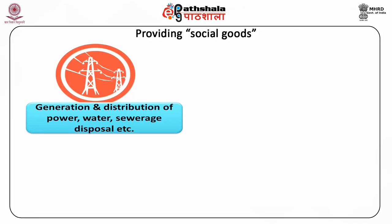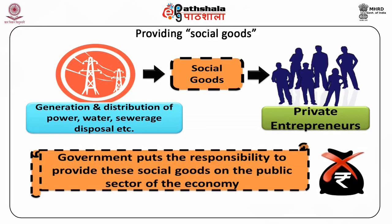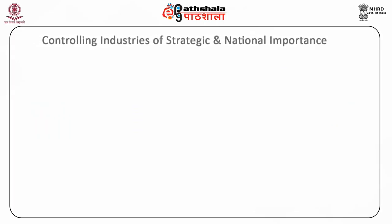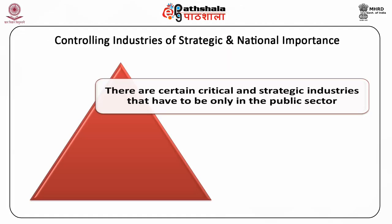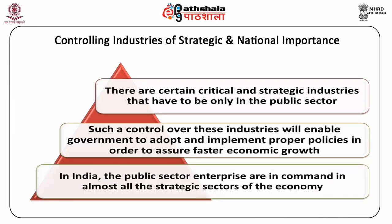Providing Social Goods: Generation and distribution of power, water, sewerage disposal, etc., are social goods and private entrepreneurs do not find any incentives in investing in these social goods. In such cases, the government puts the responsibility to provide these social goods on the public sector of the economy. Controlling industries of strategic and national importance: There are certain critical and strategic industries that have to be only in the public sector. In India, the public sector enterprises are in command in almost all the strategic sectors of the economy such as coal, iron, steel, electricity, etc.